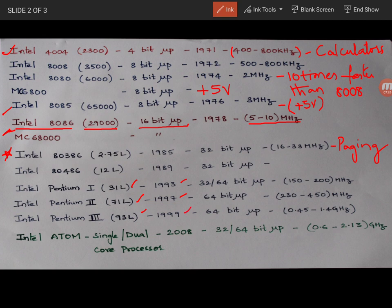So Intel Pentium 1 was, it can be operated both at 32 as well as 64 bit microprocessor. And others also, others were 64 bit microprocessor. And the operating frequency was Pentium 1 150 to 200 megahertz, Pentium 2 230 to 450 megahertz and Pentium 3 0.05 to 1.4 gigahertz.